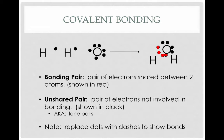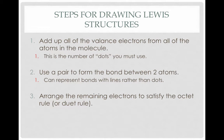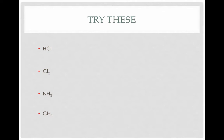Here are the steps for drawing Lewis structures. First, add up the valence electrons of all atoms in the molecule — all valence electrons go into one pot, and this is the number of dots you must use in your final structure. Then use a pair to form bonds between two atoms; you can represent bonds as lines rather than dots, but remember each line corresponds to two dots, a shared pair. Finally, arrange the remaining electrons around atoms to satisfy the octet rule or duet rule.